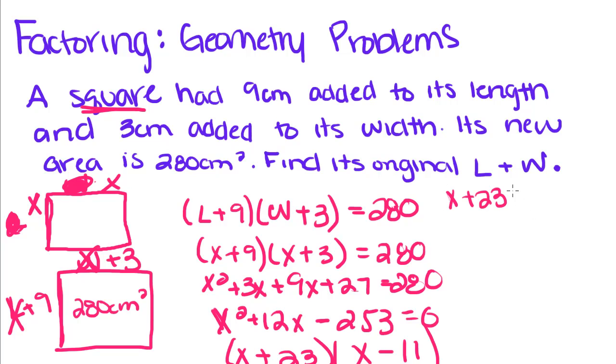So now we set each one of these equal to 0. If you subtract over you get X equals negative 23, and if you add this over you get X equals 11. Since we're talking about distance, we can kick out this answer because distance can't be negative. So we find that X is equal to 11. But they wanted to know what the original length and width was. So that means that its original length is 11 and its original width is 11.